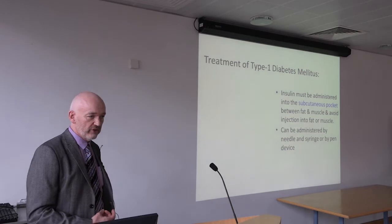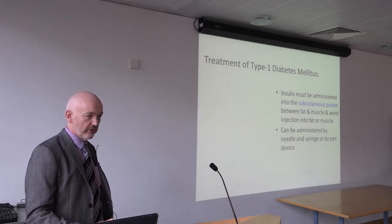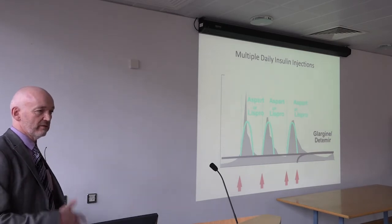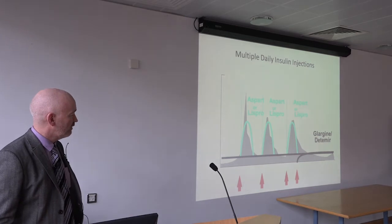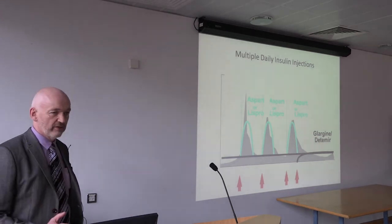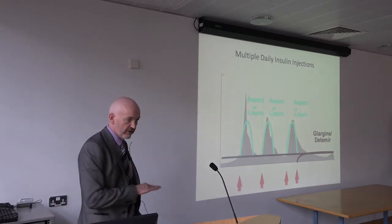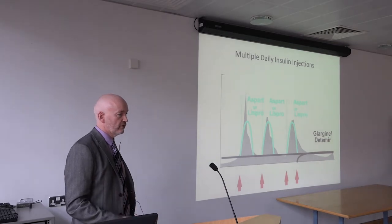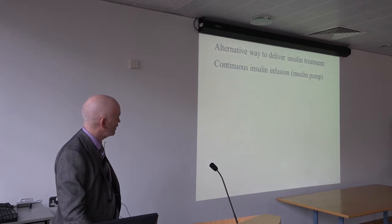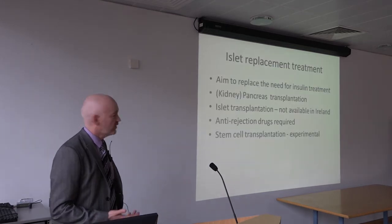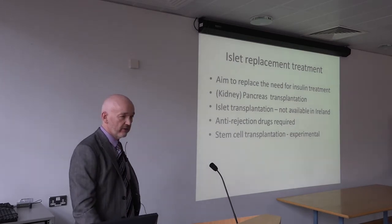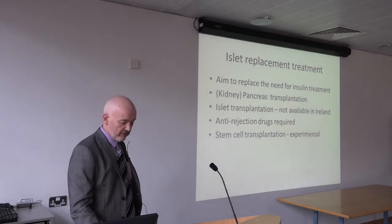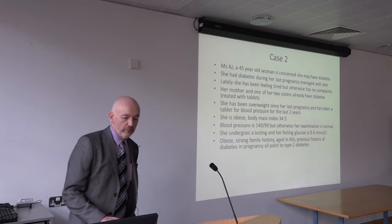The treatment of type 1 diabetes is to give insulin, either as multiple injections per day or via a pump that continuously administers insulin over 24 hours. We try to mimic the normal insulin release pattern by giving long-acting insulins as a background and rapid-acting insulins with each meal. In some countries, islet transplantation — replacing the insulin-making tissue — is also available, and that can work quite well.